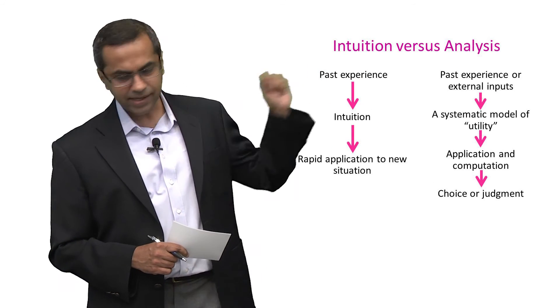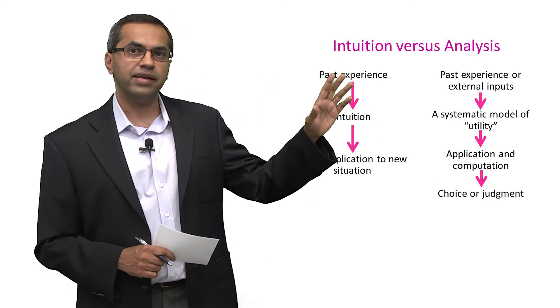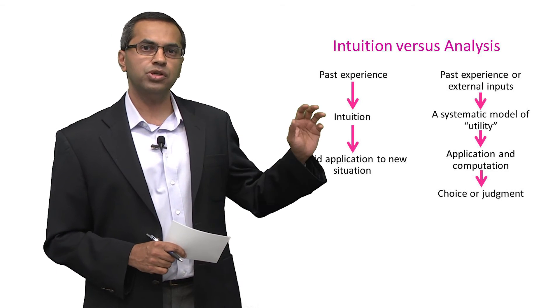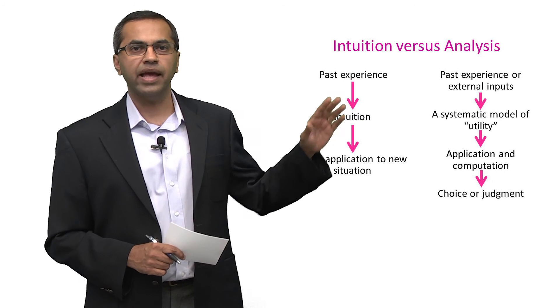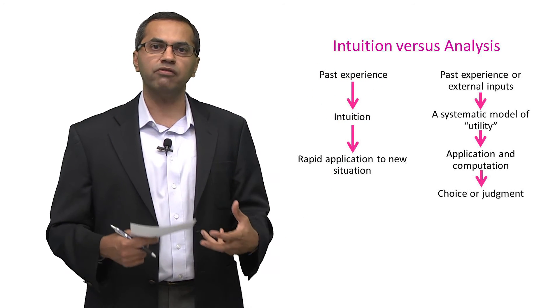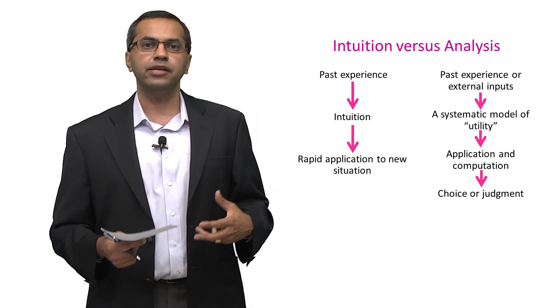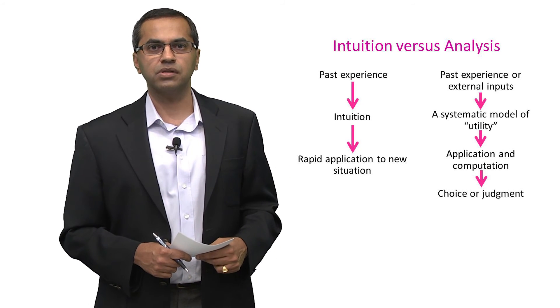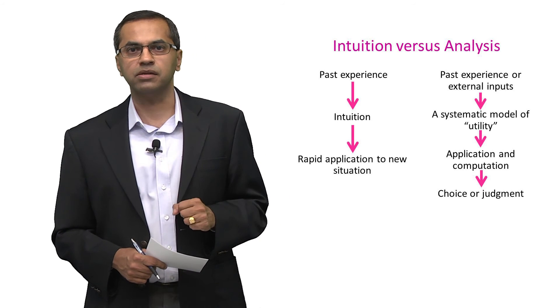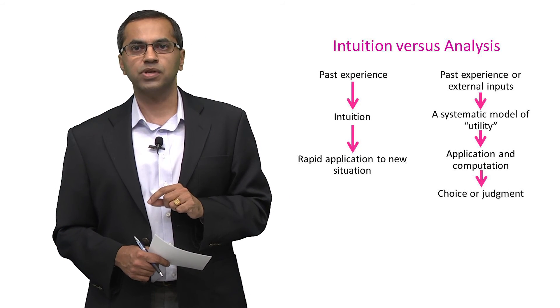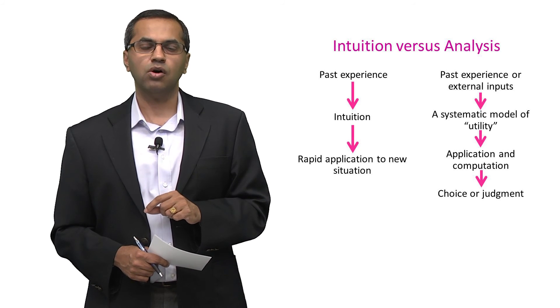Finally, it's helpful to compare an intuitive process of decision making with a more analytical process of decision making. On the right hand side, we've talked about what an analytical process looks like. What you do is you look at your past experiences, your past decisions, and use those decisions to formulate a model of relevant attributes and the importance of those attributes. You then use the model in a very systematic, deliberate, and computational manner to use data from the existing situation and make a choice.